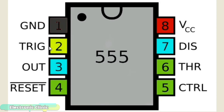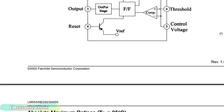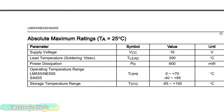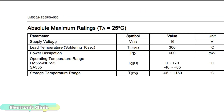Pin number 2 is the trigger. Pin number 3 is the output. Pin number 4 is the reset. Pin number 5 is the control voltage. Pin number 6 is the threshold. Pin number 7 is the discharge, and pin number 8 is the VCC. As per the datasheet, the maximum voltage can be up to 16 volts, but in my case I will be using 12 volts.